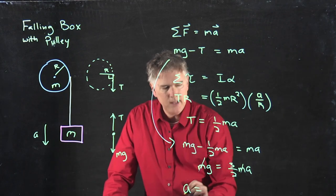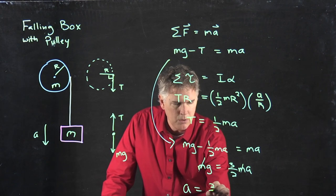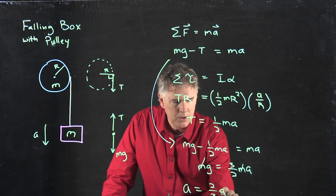I can write the result. A is equal to, when I multiply across, I get two-thirds g.